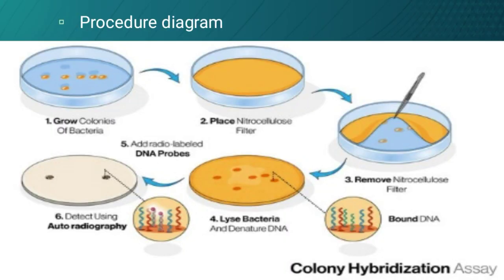Procedure diagram: the first step shows colonies grown on a plate. The second shows the nitrocellulose filter paper being transferred by placing it on the plate and then removing it, followed by several chemical treatments such as lysis of bacterial DNA. Probes are then added to the nitrocellulose-bound DNA, and it goes to the autoradiograph to detect the recombinant DNA.